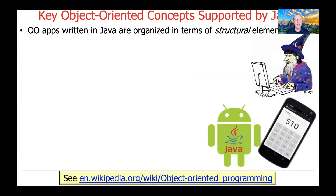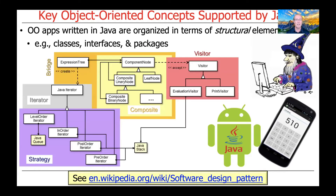Object-oriented applications written in Java are organized in terms of certain structural elements. These include things like classes, interfaces, and packages, which I'm sure you're familiar with, hopefully from learning other parts of Java earlier.